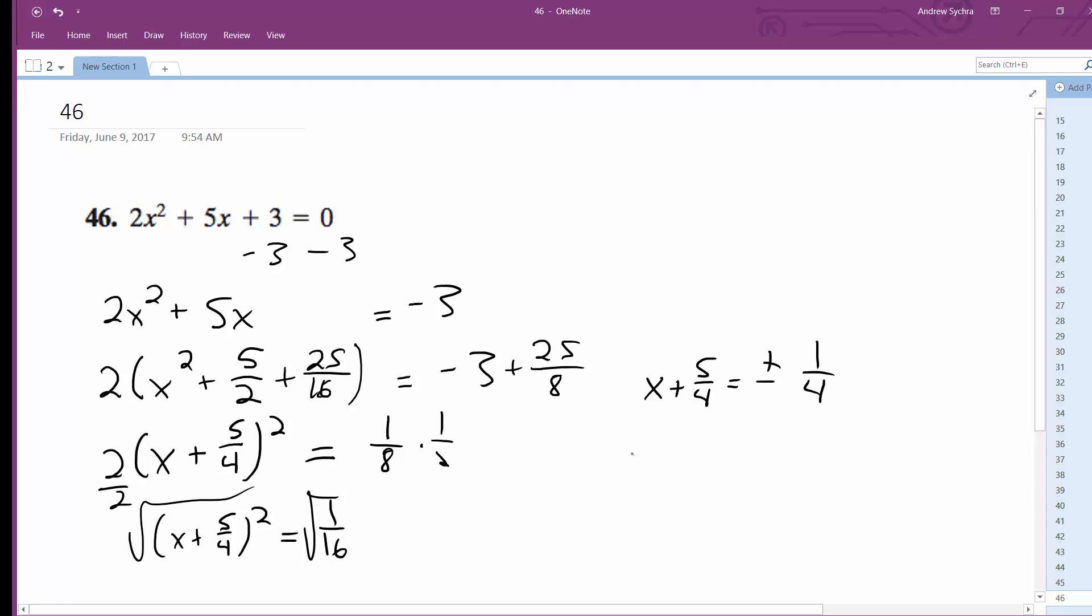And what we're left with is just x is equal. If you subtract minus 5 fourths, minus 5 fourths. And what we're left with is x is going to be equal to negative 1 and negative 3 halves.